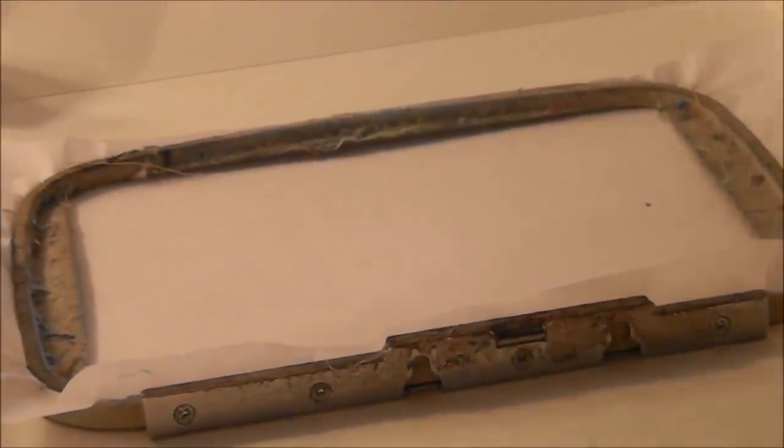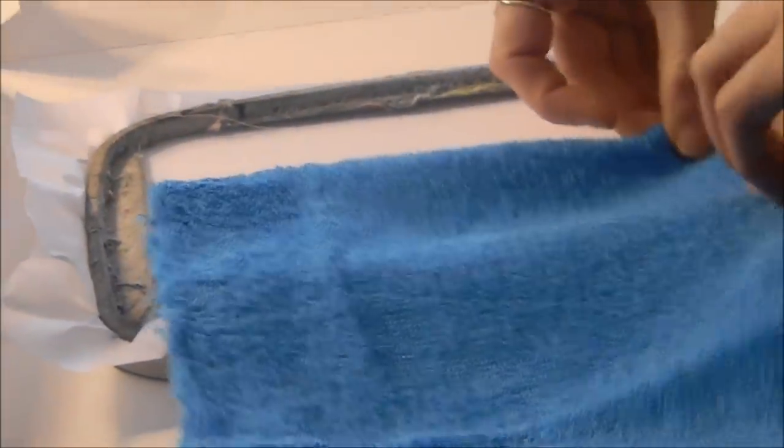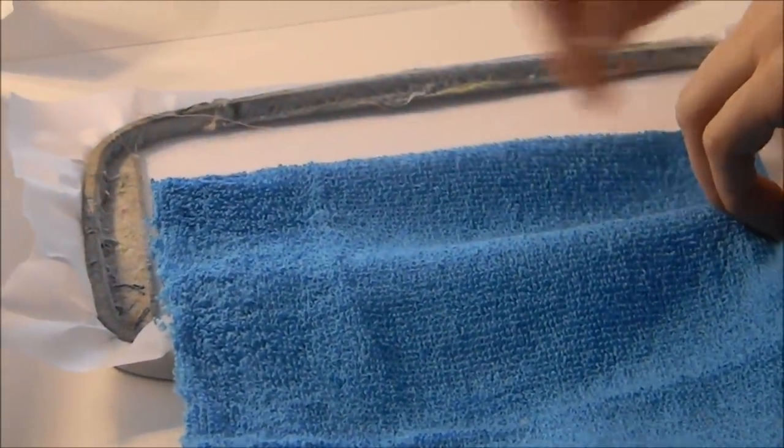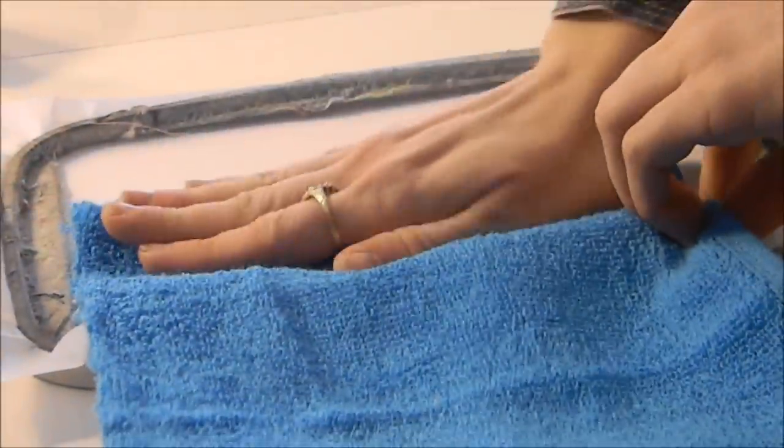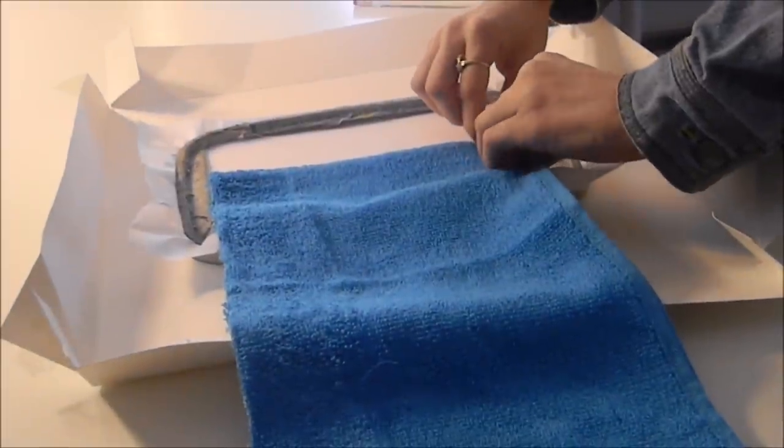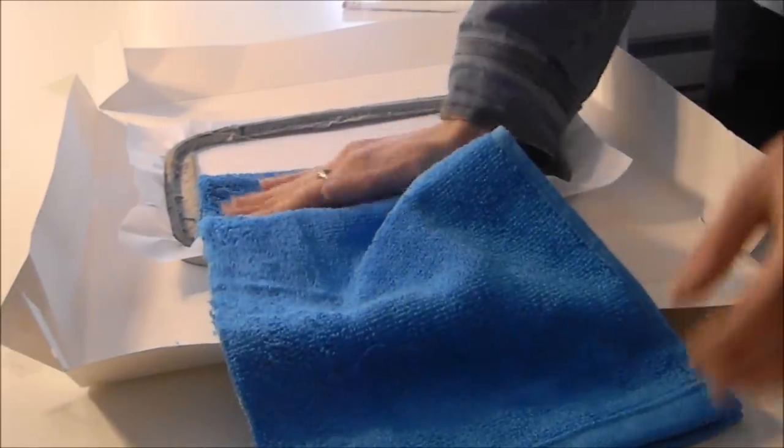I'm going to lay my towel right up, center it up with the center lines that are on your hoop and with that bottom dot right up to the edge of that factory rolled hem on the towel. Press it down so it stays in place.